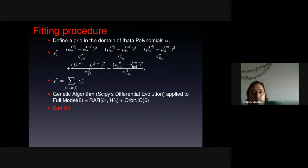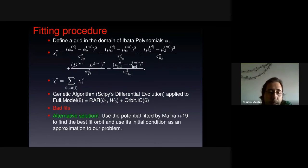But we found bad fits. The optimizer is lost in all the local maxima that has got this higher, this high parameter system. So we had an idea, it's to use an alternative solution. It is to use the potential fitted by Malhan et al., the one I showed in previous slides, to find the best fit orbit, and use its initial condition as an approximation to our problem.